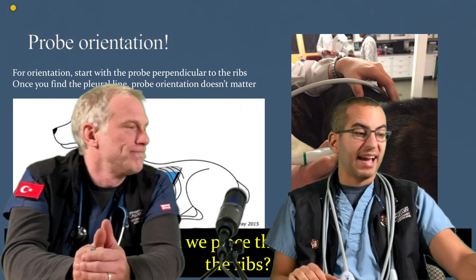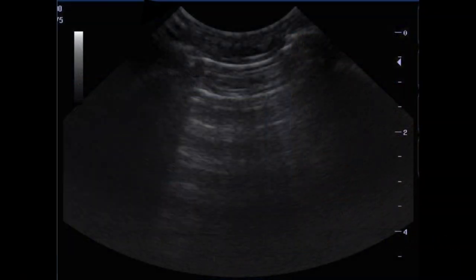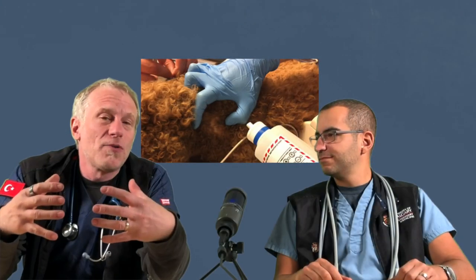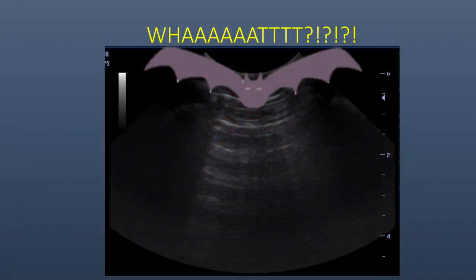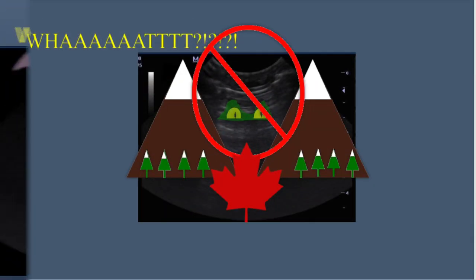Now we have this image and all I see is a bunch of lines. How can we put that into some kind of reference? We want to find the key structures that identify the pleural line. We're up here in Canada, so we're going to talk about the bat sign — it's also known as the gator sign. We have gators in Canada? That would be a no. So you have a bat.